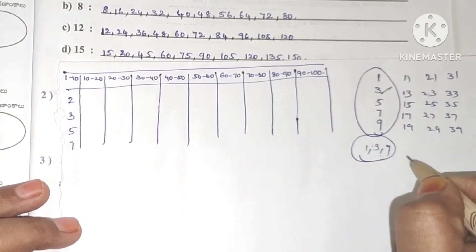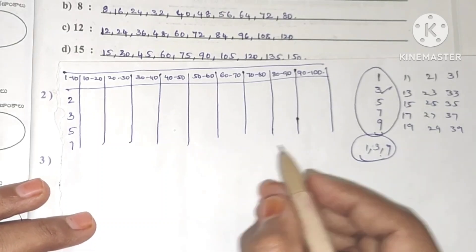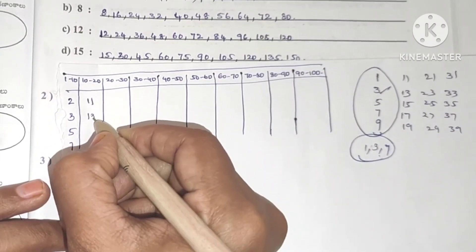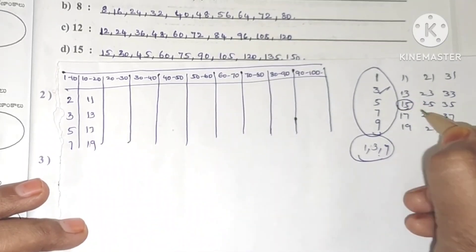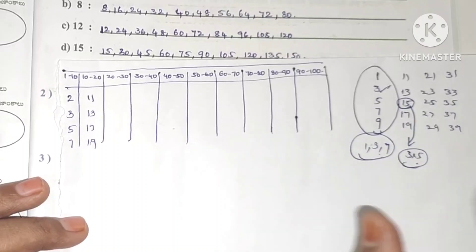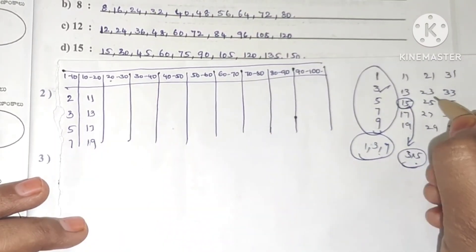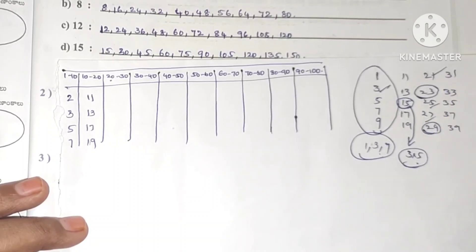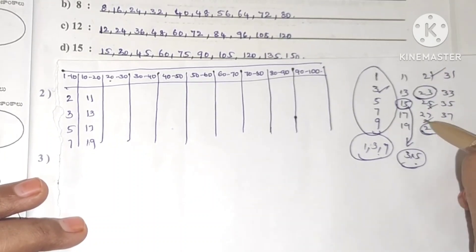9 is not a prime number because 3×3=9. Let's check each number. 11, 13, 17, 19 — from 20 to 30, we check: 29 is prime. Numbers like 3×7=21, 5×5=25, 3×9=27 are not prime.